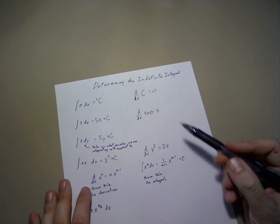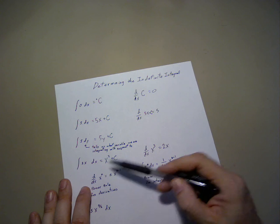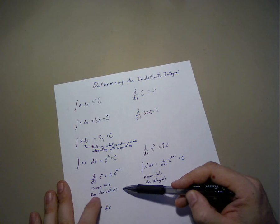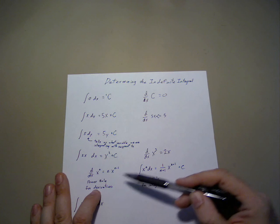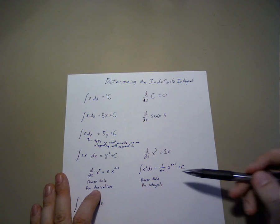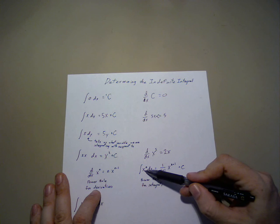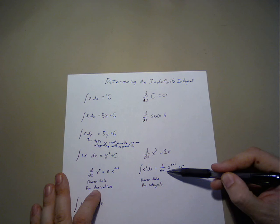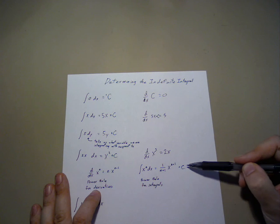In general, the derivative of x to the power of n is n times x to the n minus 1. This is the power rule for derivatives. Likewise, we can say that the power rule for integrals working backwards is for x to the n dx is 1 over n plus 1 times x to the power of n plus 1 plus c.